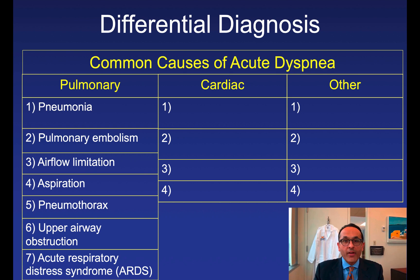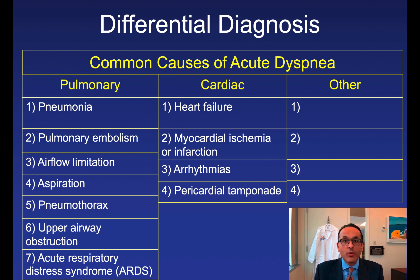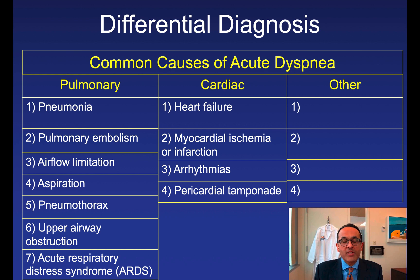The four cardiac causes are: heart failure — very common, whether due to systolic or diastolic dysfunction; myocardial ischemia or infarction — certain patients develop this without chest pain, including women, elderly patients, diabetics, and those who have undergone cardiac transplantation; arrhythmias — shortness of breath especially accompanied by palpitations or lightheadedness should make you think the patient is having an arrhythmia; and pericardial tamponade — patients can have chest pain if they have pre-existing pericarditis, which is also respirophasic in nature, getting better when leaning forward and worse when leaning back.